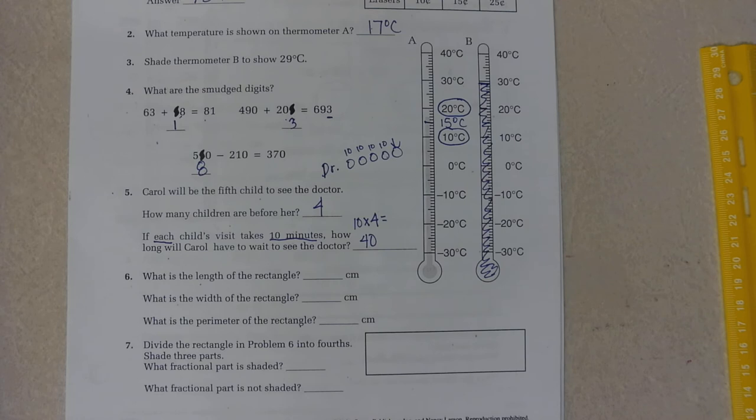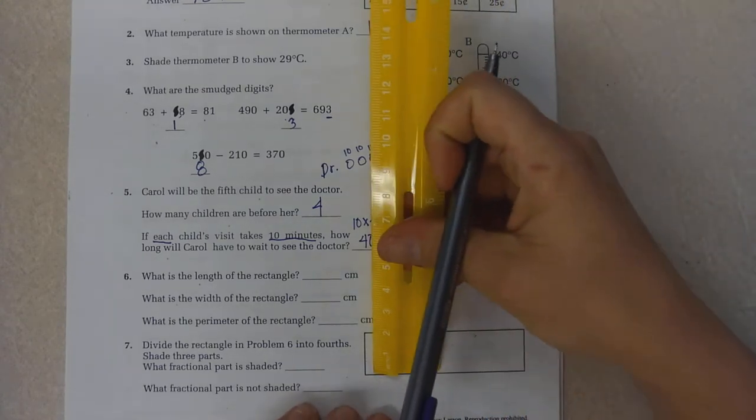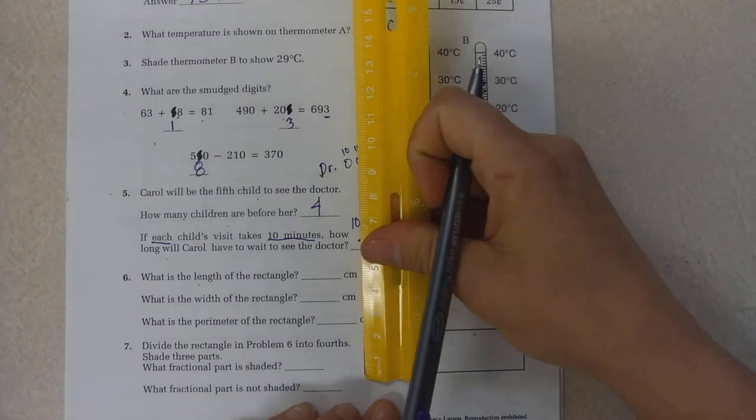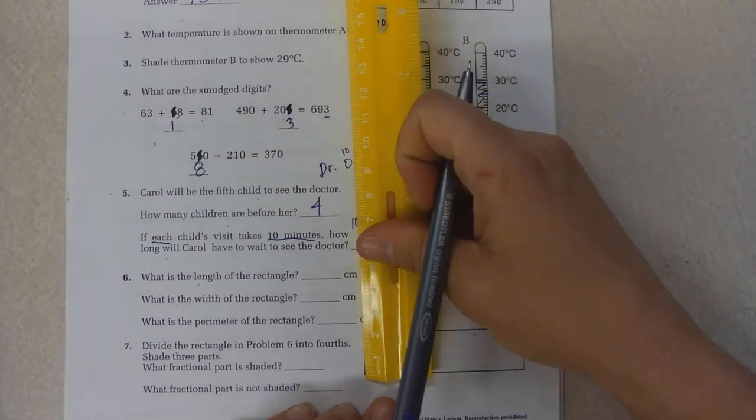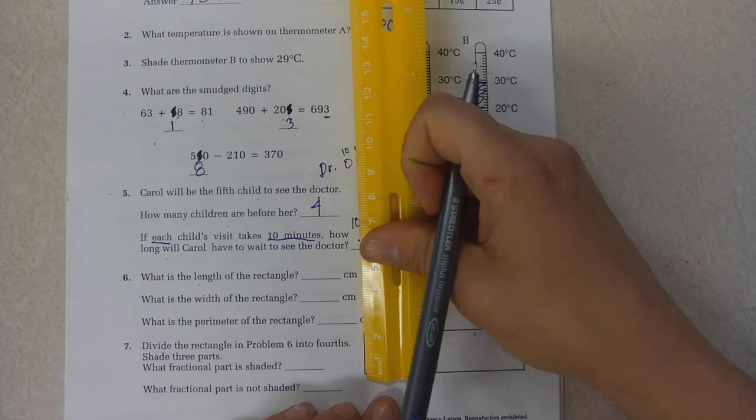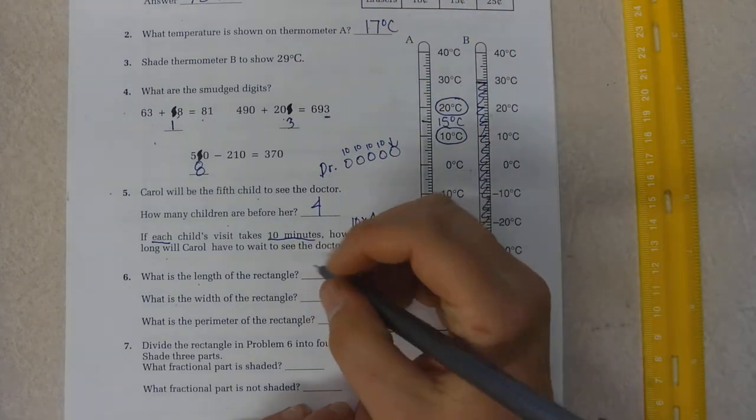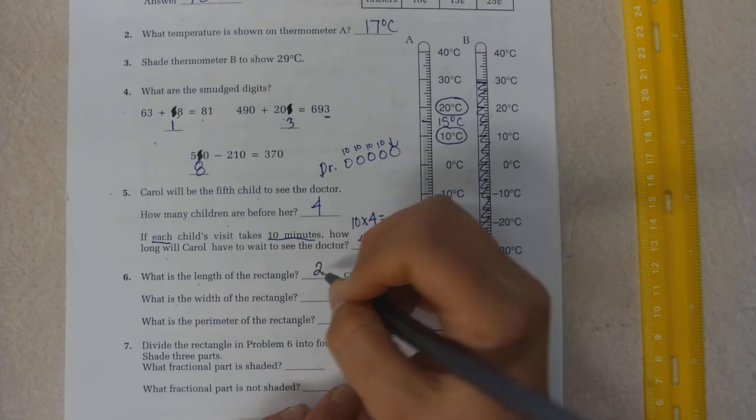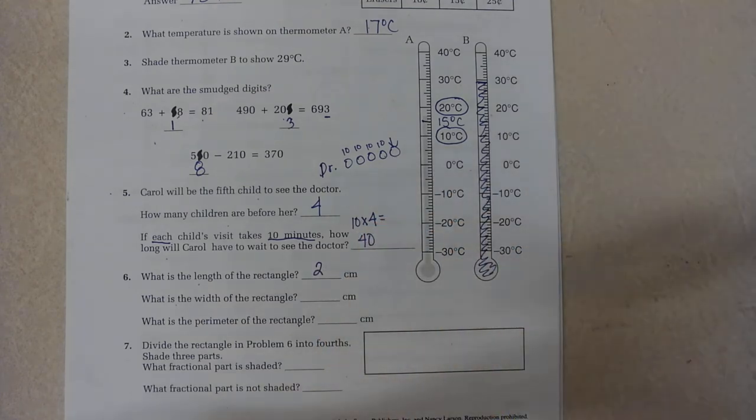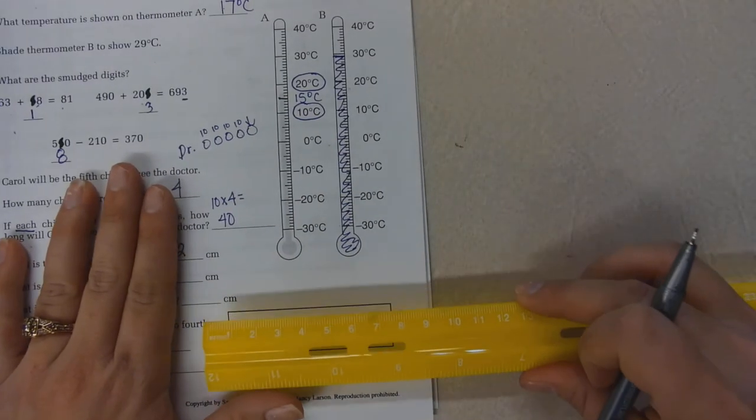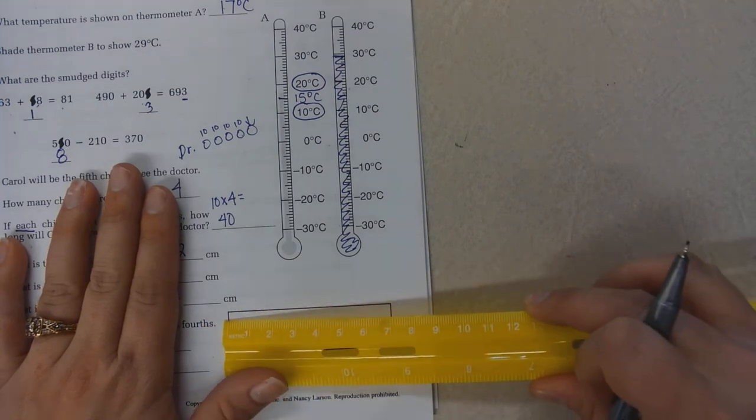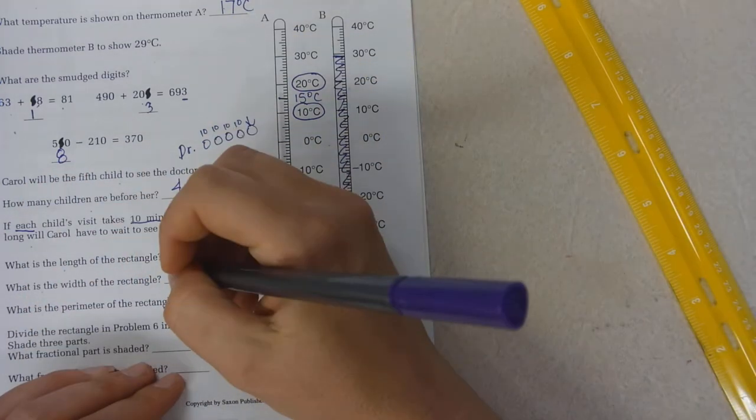What is the length of the rectangle and what is the width of the rectangle? My length would be approximately 2 centimeters. It's not quite 2, but it's approximately 2 centimeters. And the width is approximately 7. Not exactly.